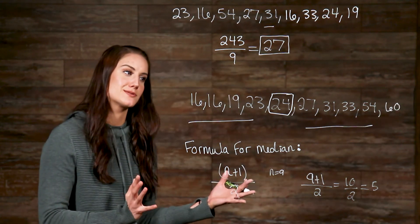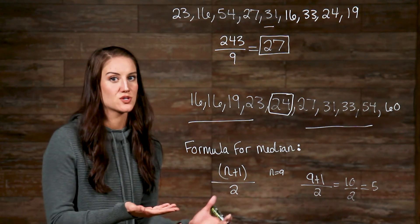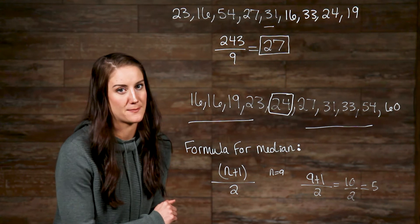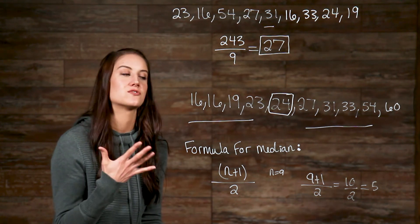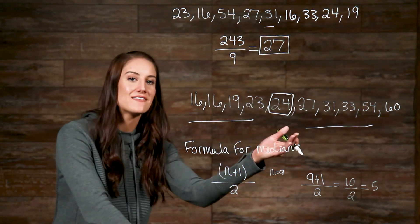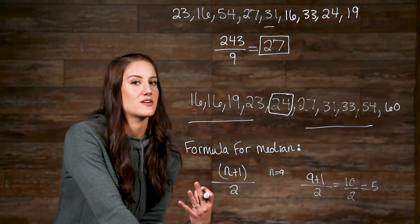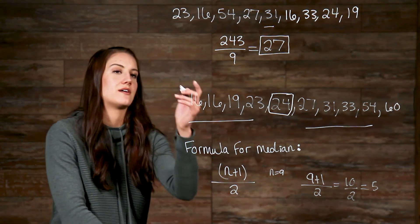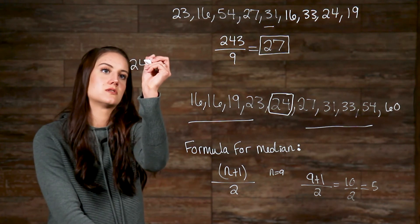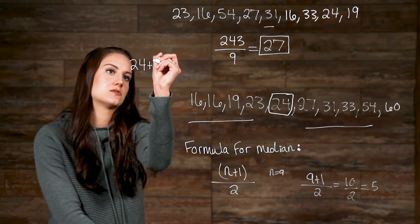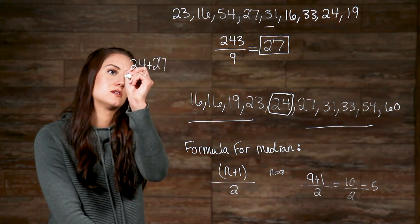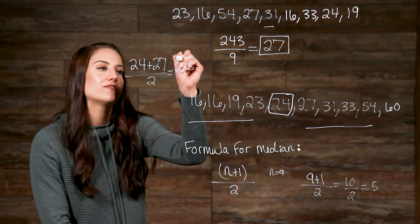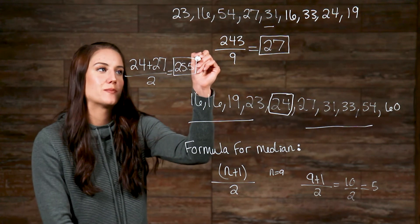So, now we have 10 numbers, which is an even amount of numbers. So, we need to take the mean of the 5th and 6th numbers. So, we take the sum of 24 and 27, then divide by the amount of numbers that we are summing, which, in this case, is just 2. So, this makes 25.5 our median.